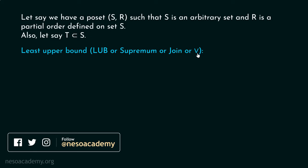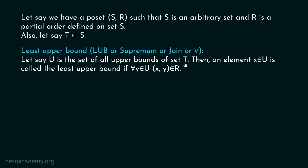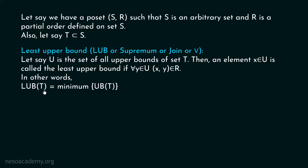And sometimes we represent this least upper bound by the disjunction sign. Let's say U is the set of all upper bounds of set T. I am considering some set T which is nothing but a subset of set S, and U is the set of all upper bounds of set T. Then an element X belonging to U is called the least upper bound if for all Y belonging to U, X, Y belongs to R. This means this element, which is an upper bound of set T, must be related to every other upper bound. Then only we can say this upper bound is a least upper bound. In other words, least upper bound of T is nothing but the minimum of all the upper bounds of set T. We know how to find the minimum or least element out of the set of upper bounds, so it is always an easy task.